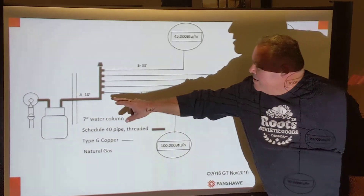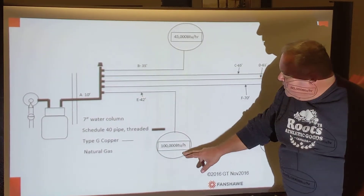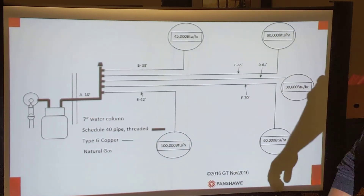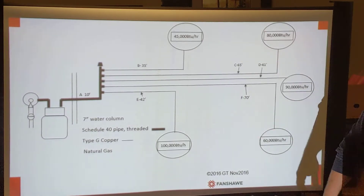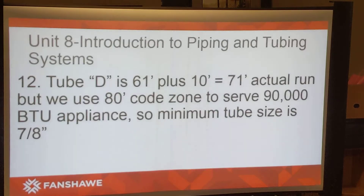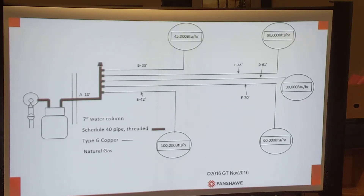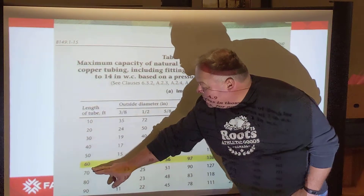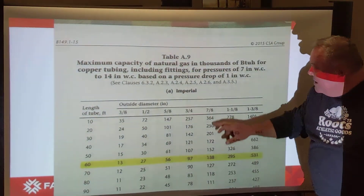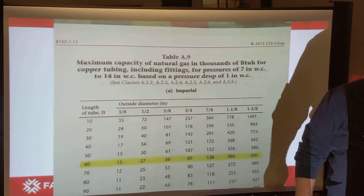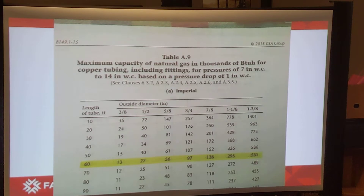For section E, we have 42 feet of tubing with 100,000 BTUs per hour along with the 10 feet of schedule 40 pipe, so 42 plus 10 is 52 feet, which takes us to the 60-foot code zone. At the 60-foot code zone looking for 100,000 BTUs, three-quarter inch falls just short, so the answer is 7/8-inch tubing.